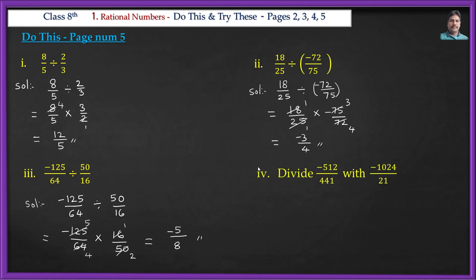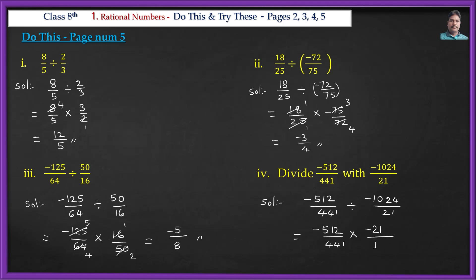Next question: divide -512/441 by -1024/21. This equals (-512/441) × (-21/1024). Let us solve this problem.